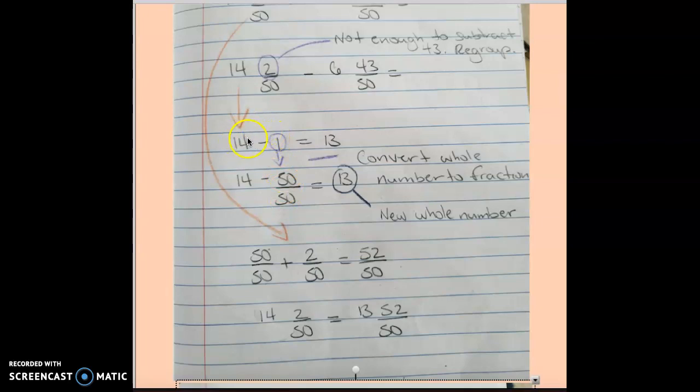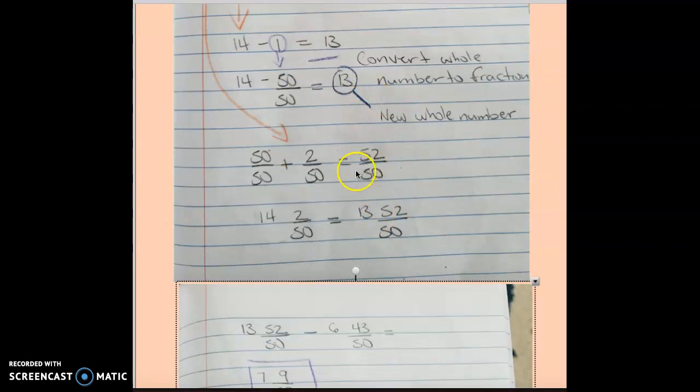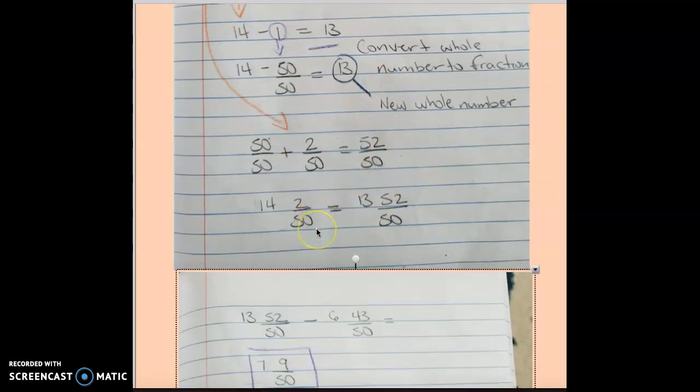I did my regrouping. I converted my one whole into 50 over 50. 14 wholes minus 50 over 50 equals 13 wholes, that's my new whole number. I'm going to add the 50 over 50 to 2 over 50, and now I have 52 over 50. Yes, it is an improper fraction, but that's okay because we will convert later.